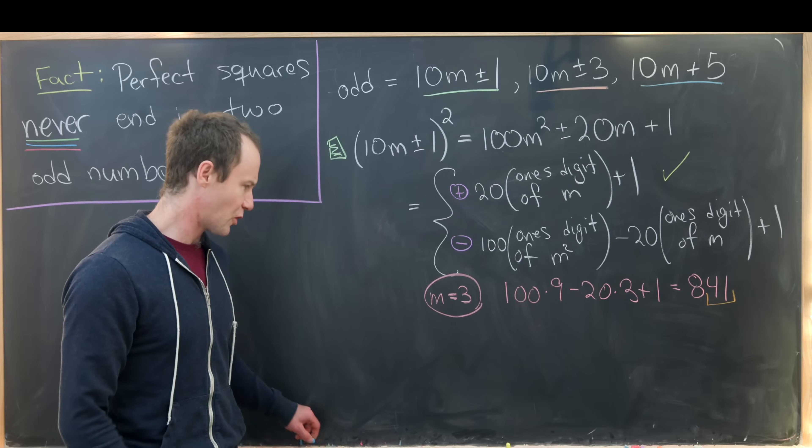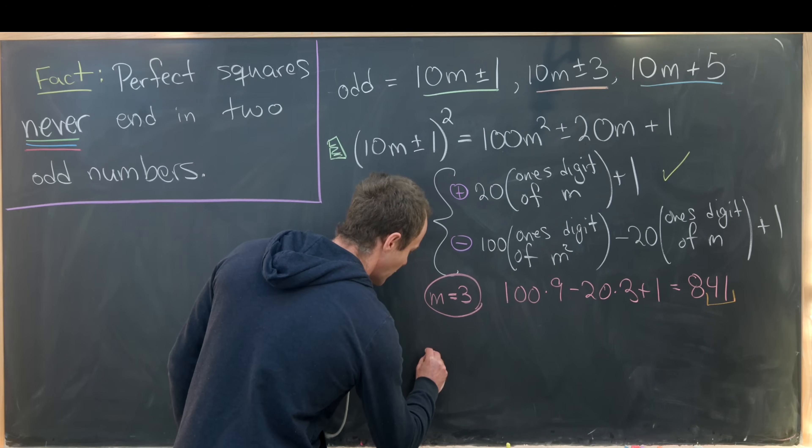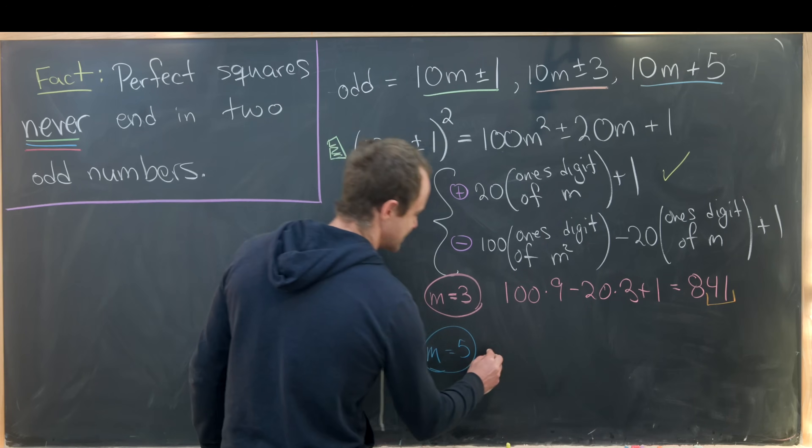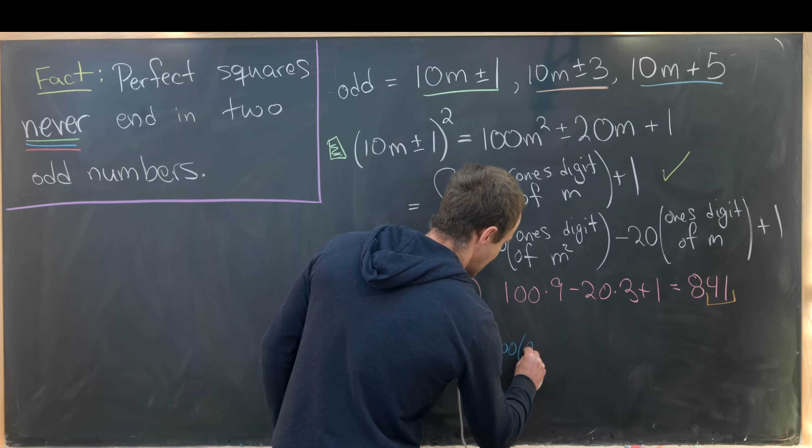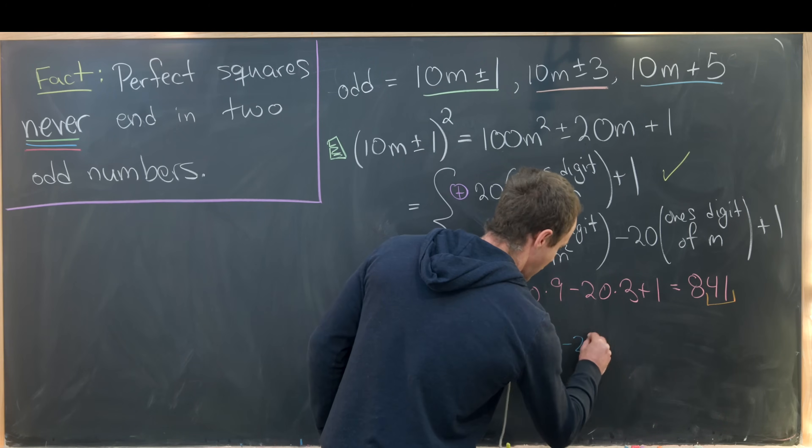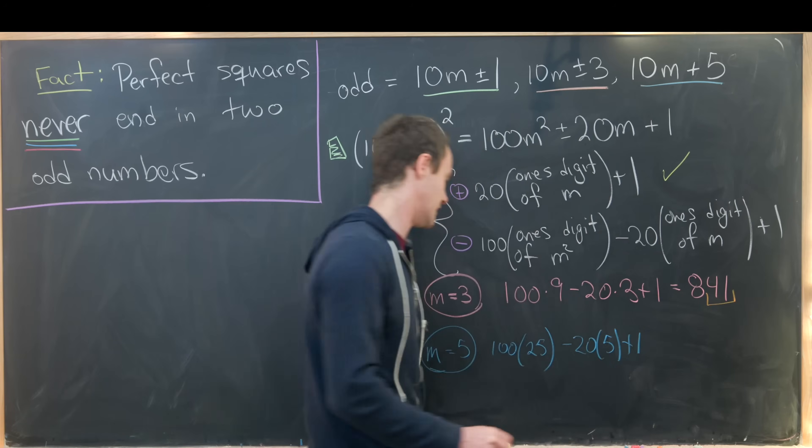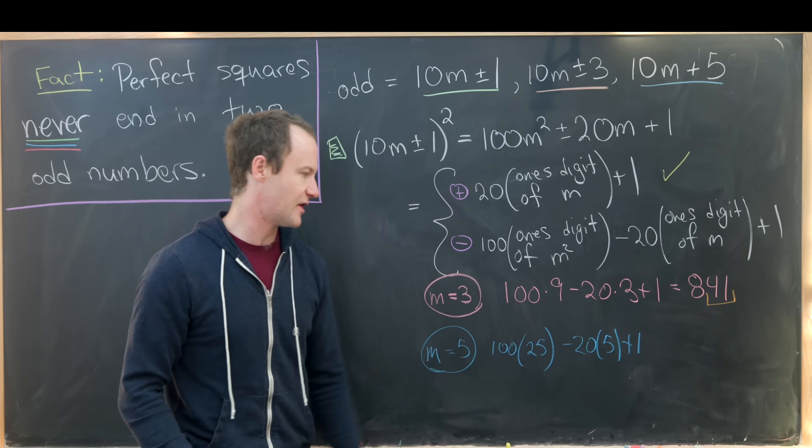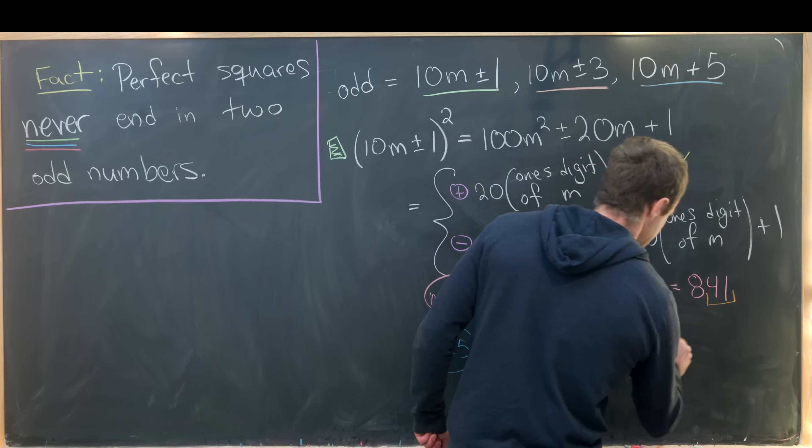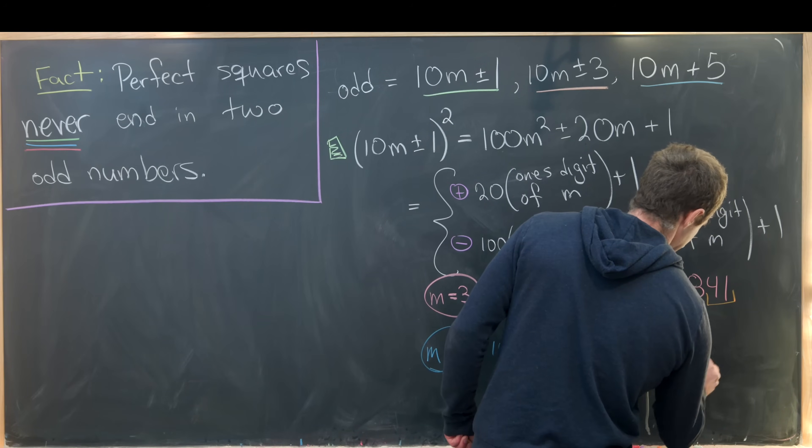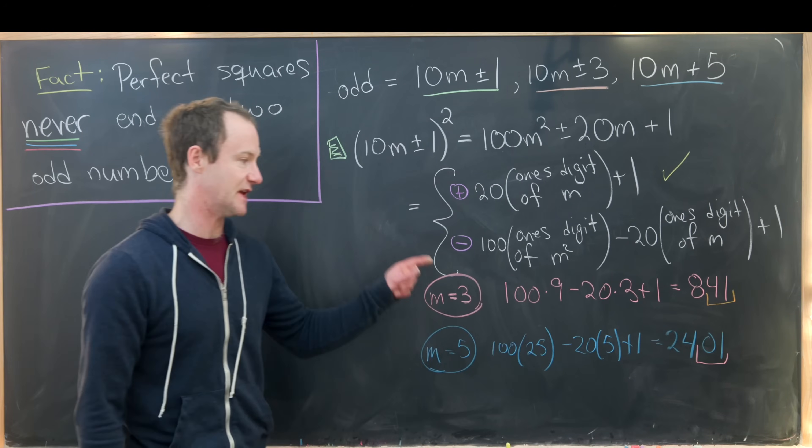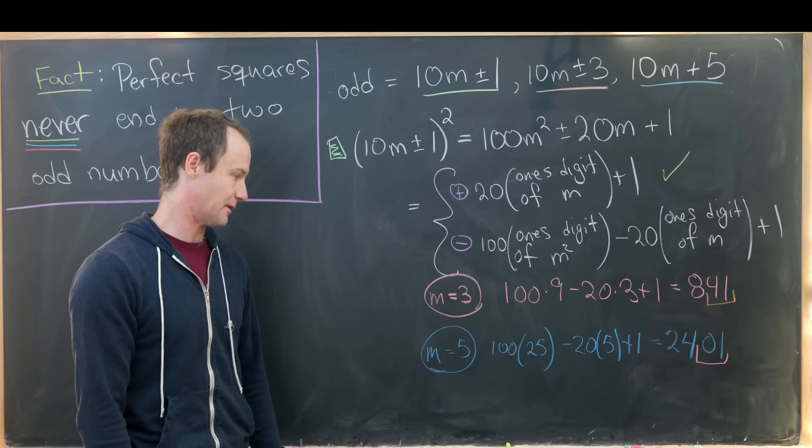And then furthermore, we could do maybe one more little example here. What happens if m equals five? Well, and that means we have 100 times 25 minus 20 times five plus one. That's going to be 2500 minus 100. That's 2400 plus one. So that's 2401. But again, looking at the last two digits, you see that we end in an even number and then an odd number.